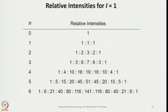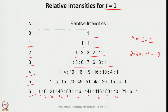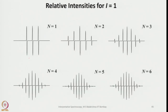Similarly, one can also write relative intensities for i equals 1. For N=0, one line; for N=1, 3 lines. For example, considering 14N where i equals 1: when N=2 we have 5 lines with ratio 1:2:3:2:1; when N=3 we have 7 lines with ratio 1:3:6:7:6:3:1. For N=6 we will have 13 lines. So N=1 gives a triplet; N=2 gives 5 lines, as shown.